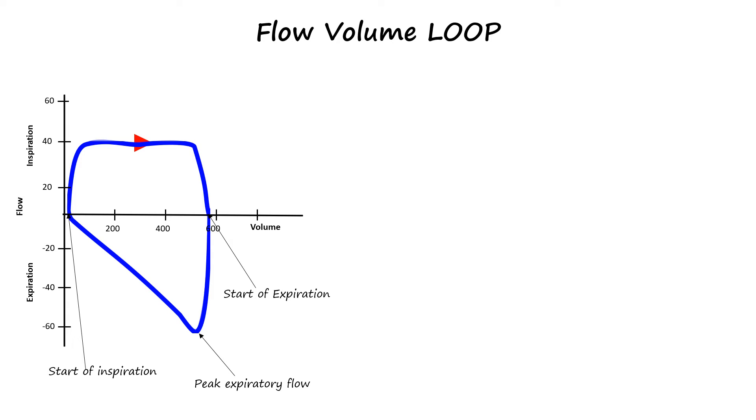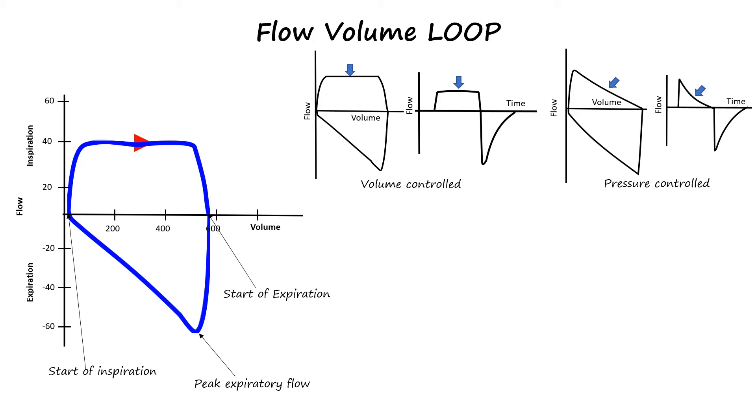The shape of the inspiratory curve reflects the settings of the ventilator showing how the breath is controlled. When assessing the lung function of a spontaneously breathing patient, the flow-volume loop runs in the opposite direction.